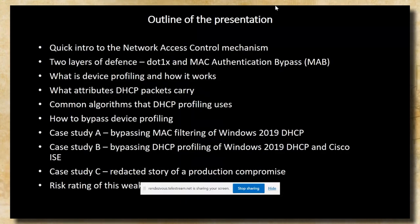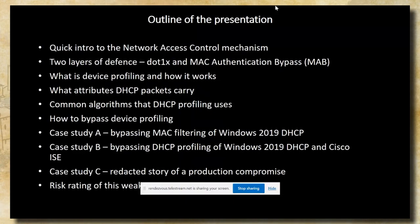First, I'll give you a quick intro to the network access control mechanism and what that is. Then the two layers of defense that comprise network access control, which are .1X and MAC authentication bypass. Then we'll look at what device profiling is and how it works, what attributes DHCP packets carry, and the common algorithms that DHCP profiling uses, followed by the steps to bypass device profiling. I'll present three case studies and conclude with a risk proposal and potential protective measures.